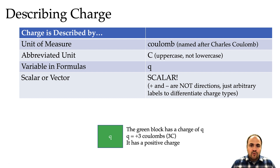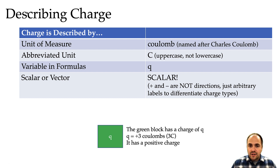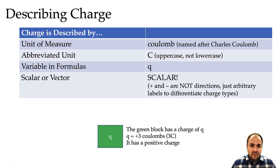When we use a variable in formulas for charge, we use the letter Q. Charge is a scalar quantity, meaning it has a magnitude but it does not have a direction. The positive and negative don't imply a direction — they imply a type of charge. We use positive and negative to differentiate between the two types of charges because they both behave differently in an electric field. So positive and negative in this case do not mean a direction; they are just a way of differentiating the types of charges.